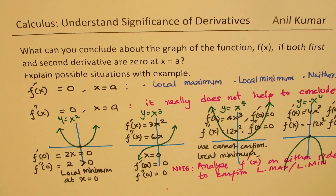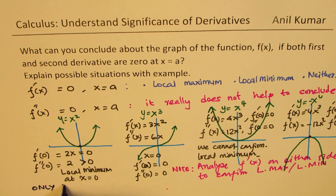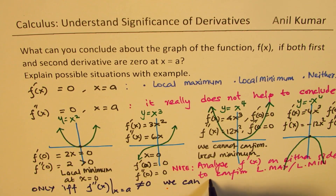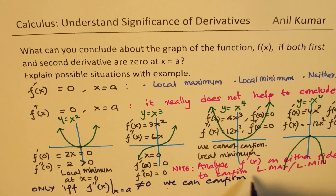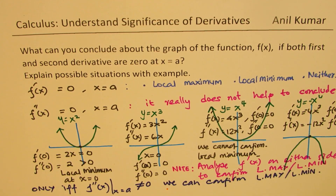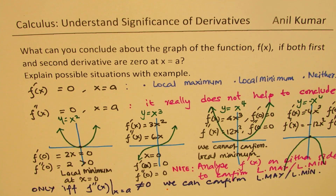I hope the concept is clear. Note: only if the second derivative at x equals a is not equal to 0 can we confirm a local maximum or local minimum. Otherwise, we have to analyze the first derivative. That is the focus of this video. Feel free to write your comments, share your views, and if you like and subscribe to my videos, that would be great. Thanks for watching and all the best.